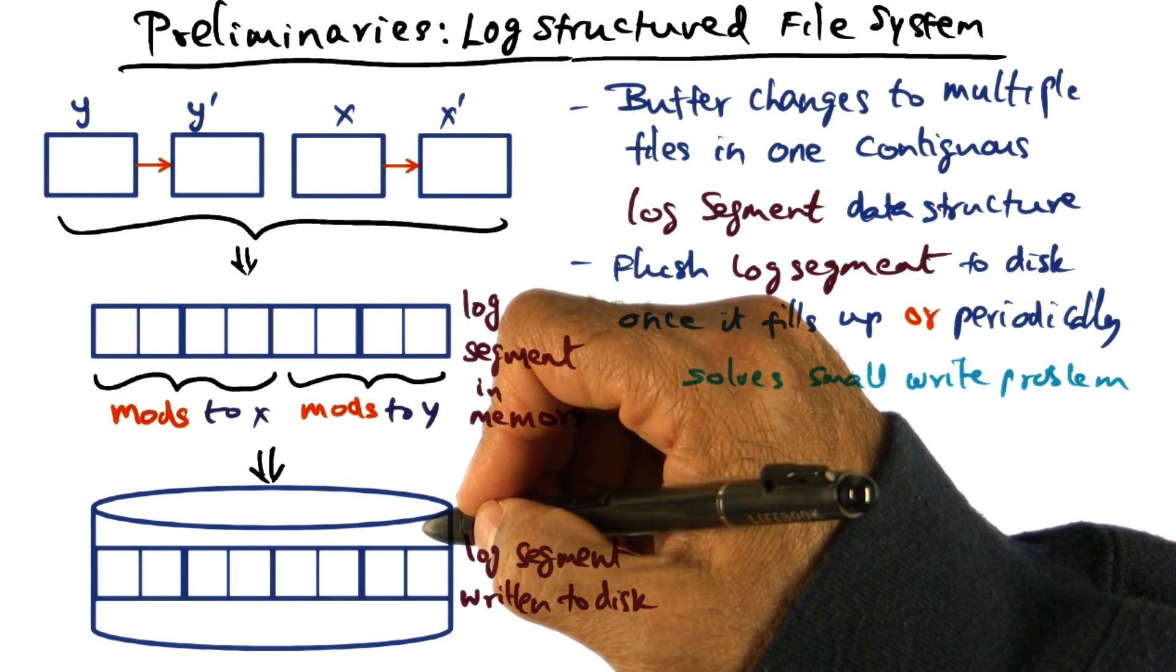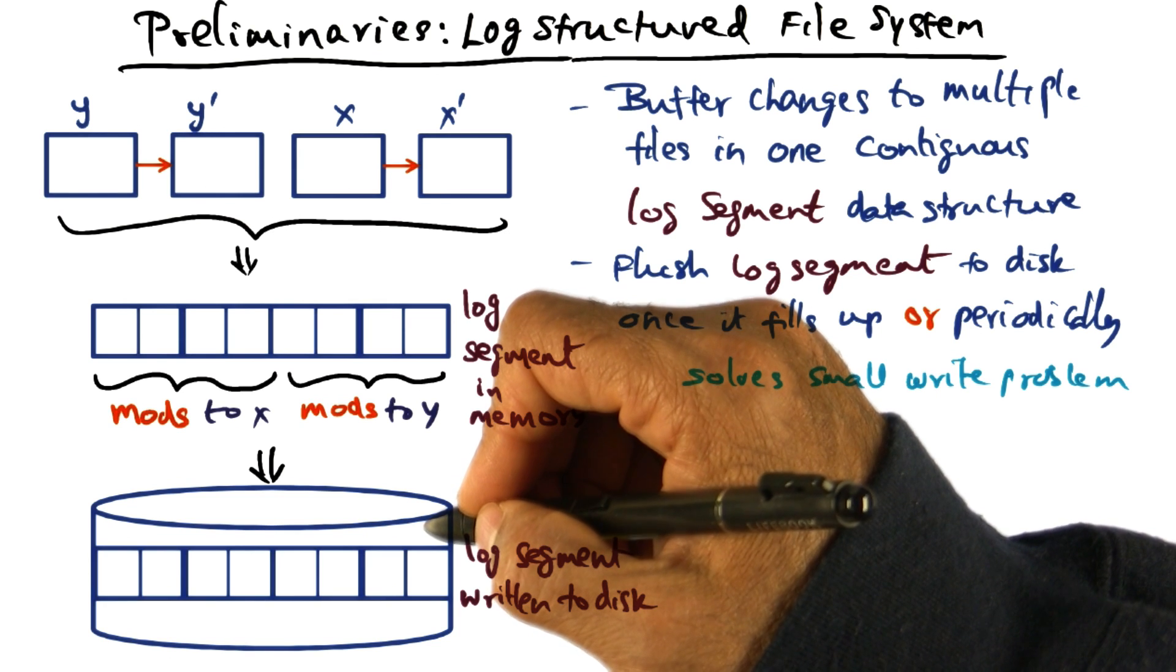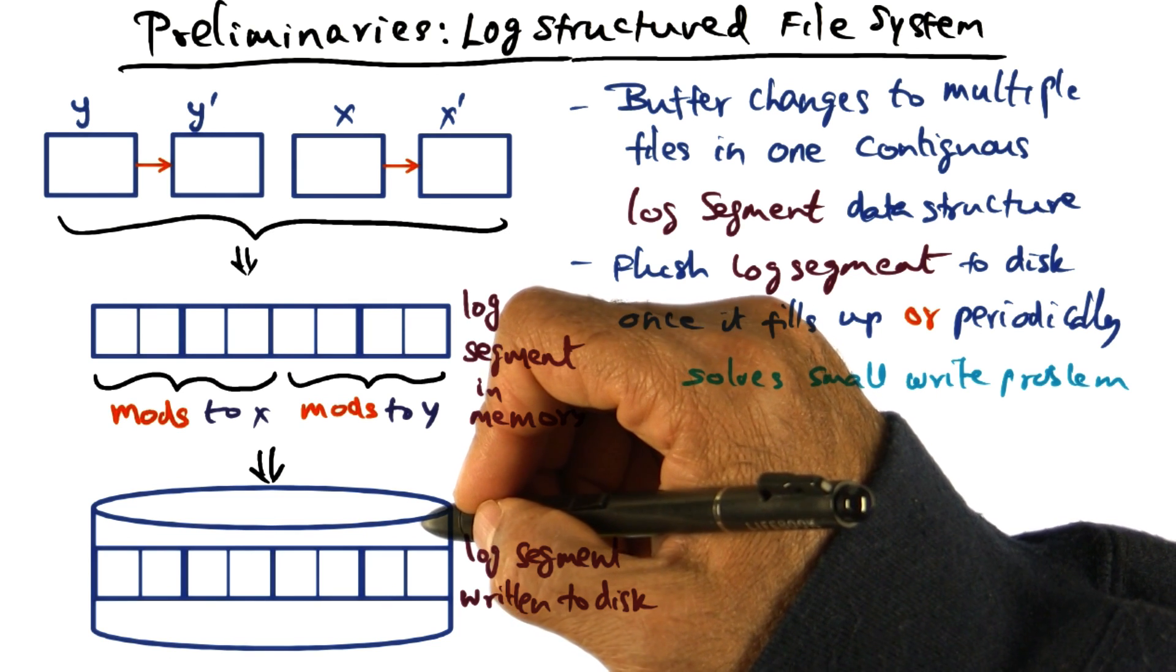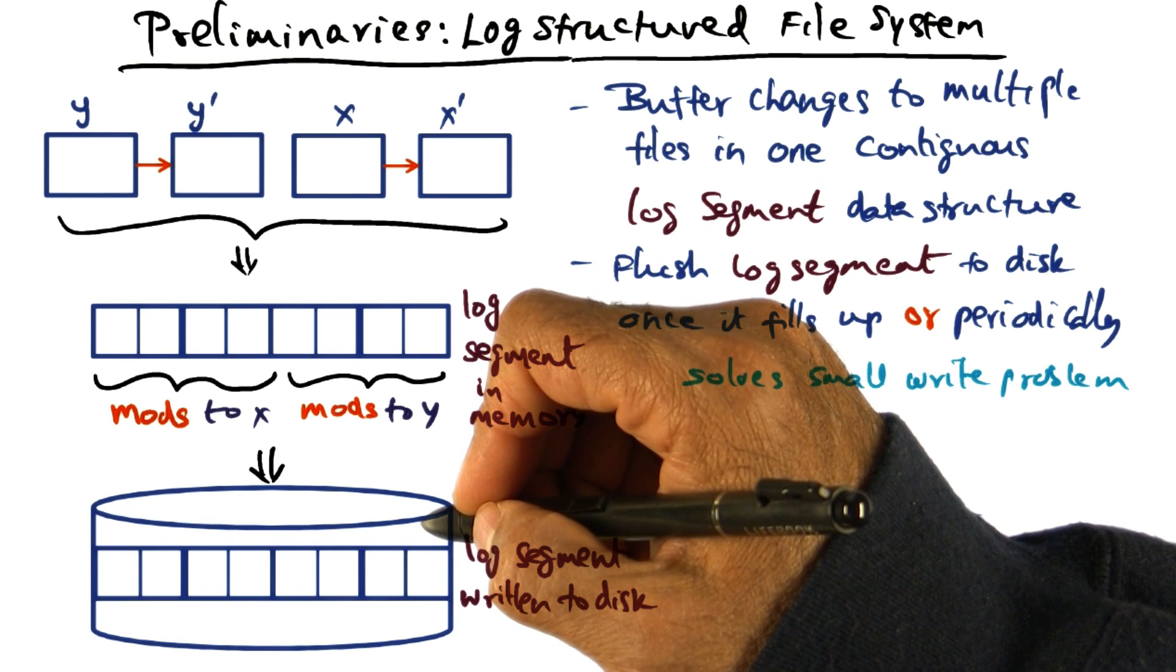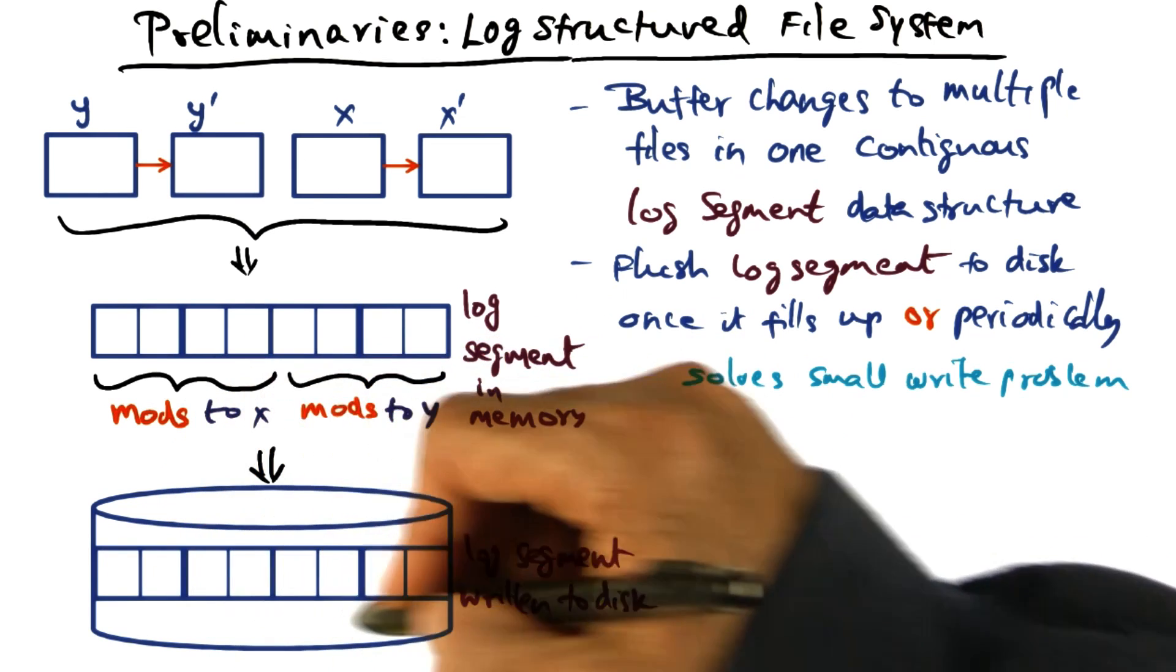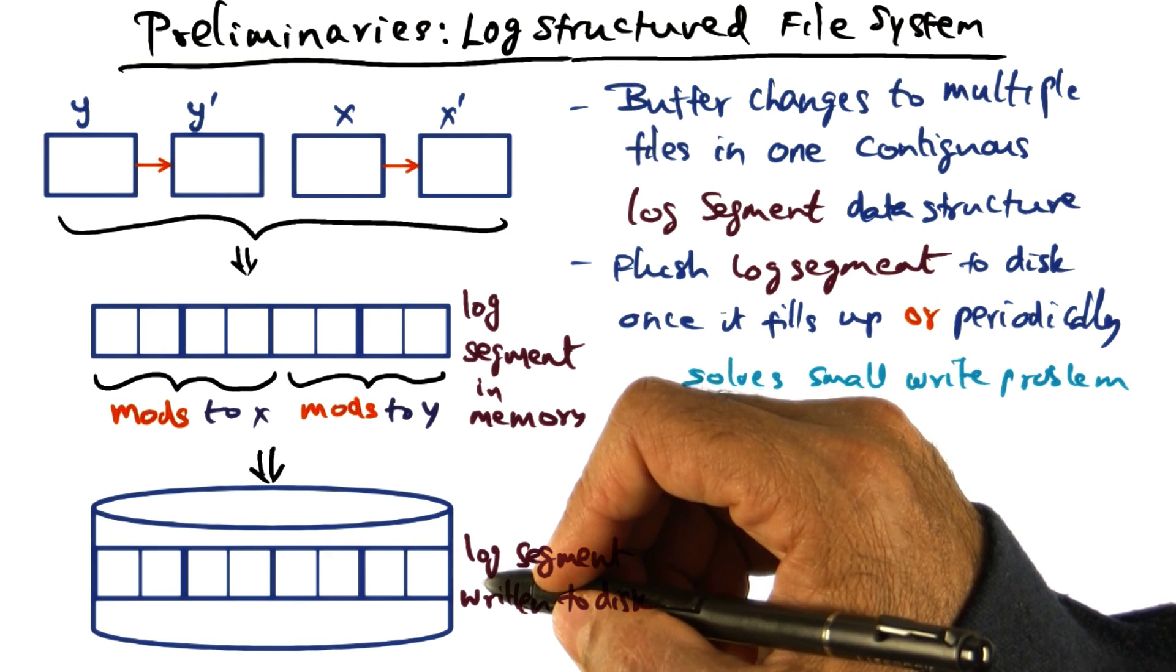Of course, once it comes into the memory of the server, then in the file cache, the file is going to remain as a file. But if at any point the server has to fetch the file from the disk, it's actually fetching the log segments and then reconstructing the file from the log segments.